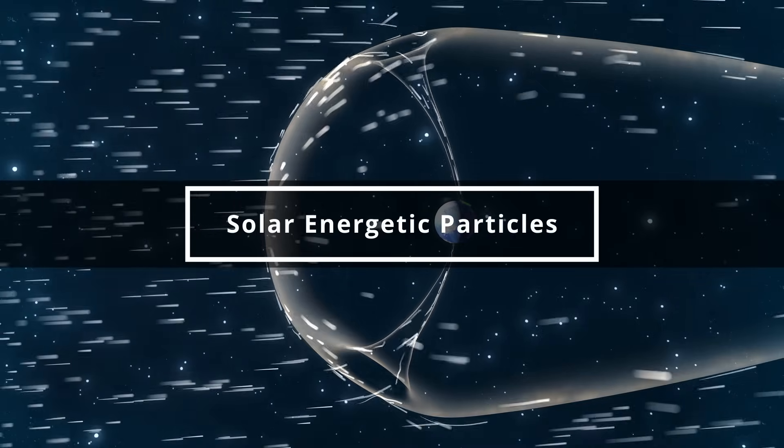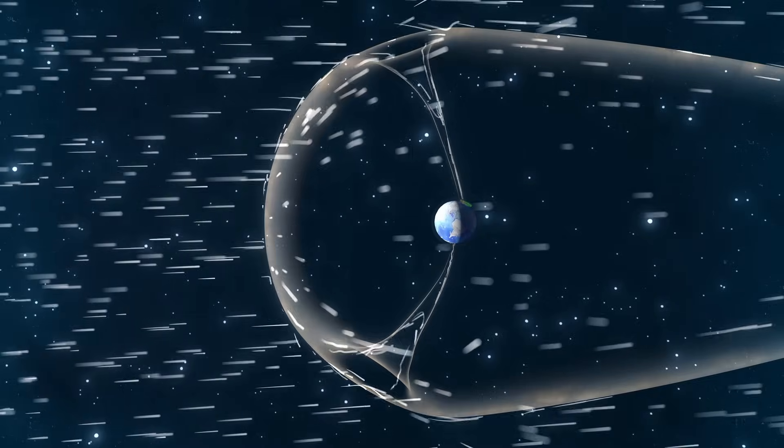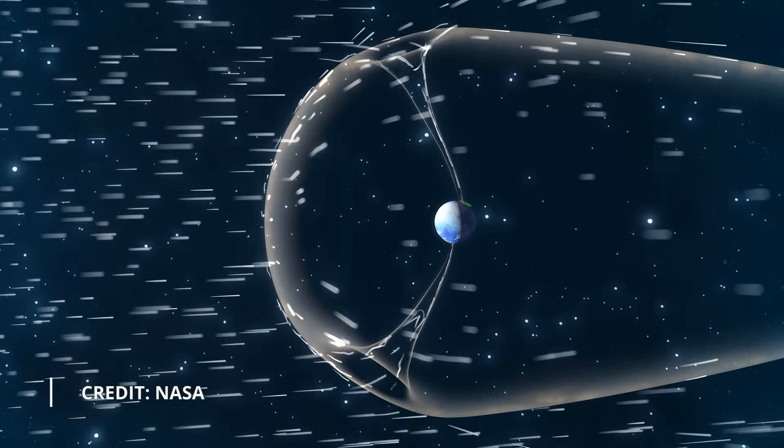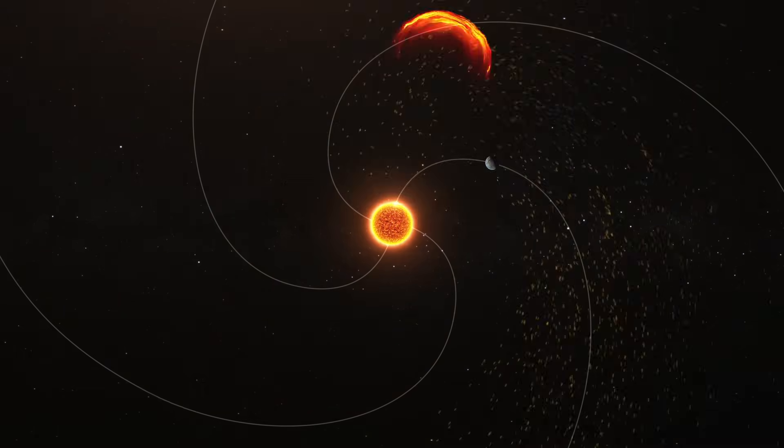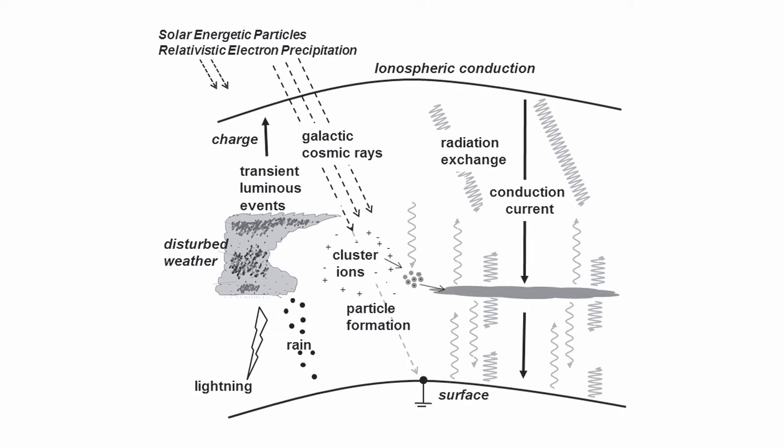As high-speed solar wind particles traverse space, some among them exhibit even greater velocities, earning them the designation of solar energetic particles. These exceptionally energetic particles possess the capability to breach Earth's magnetic field and traverse the atmosphere to altitudes where thunderclouds congregate.